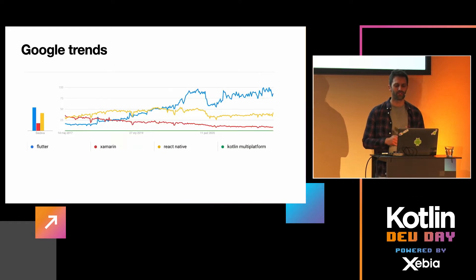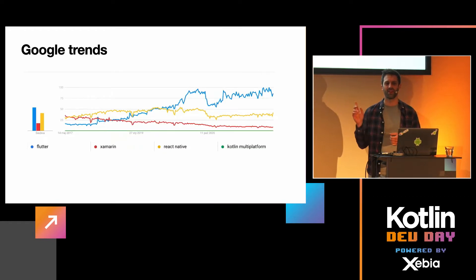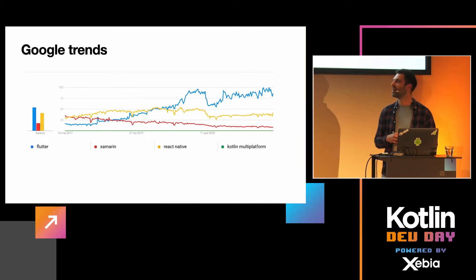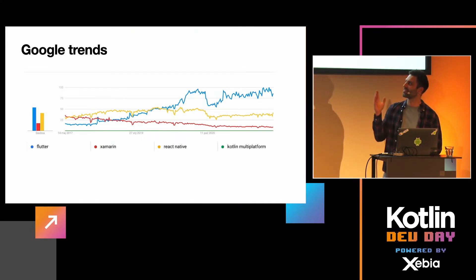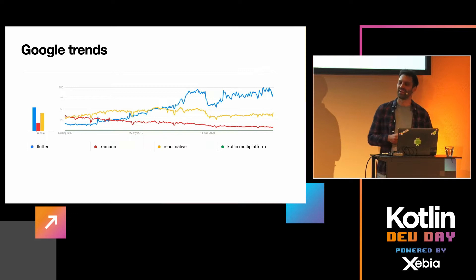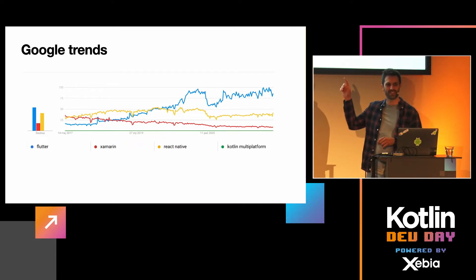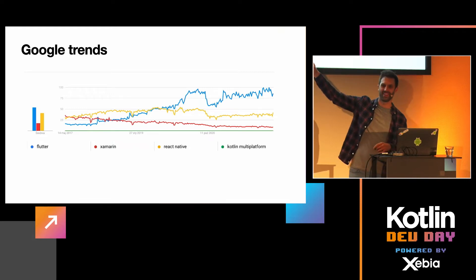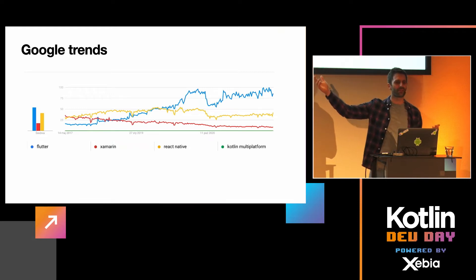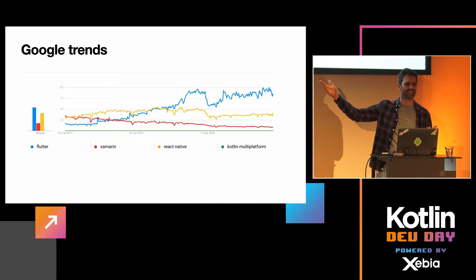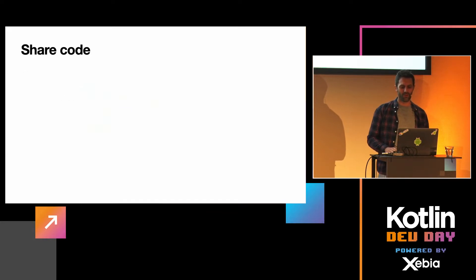Here are some Google Trends of the three most popular multi-platform frameworks. You can see Flutter, Xamarin, React Native — but Kotlin Multiplatform is there as well. You see that green line? Flutter was small at first too, and look where it is right now.